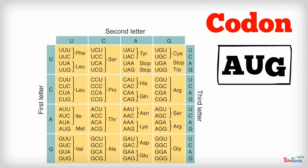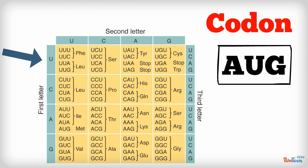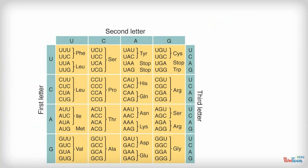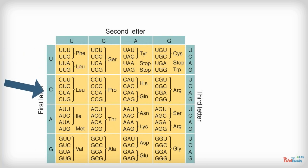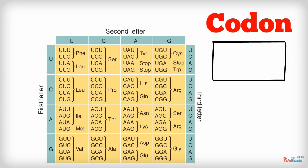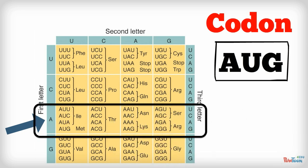Let's say you have the codon AUG. We go to the left column for the first letter. The left column has the letters U, C, A, and G. Notice that all the codons next to the letter U start with U, and all the codons next to the letter C start with C. So we need the third group of codons — those all starting with the A nucleotide.